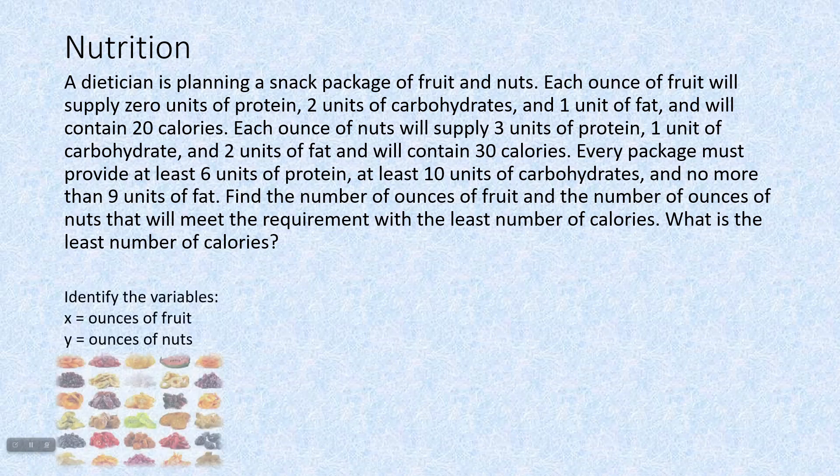Usually the question is how we identify our variables, but the question is what is the least number of calories? So we have to go back to our action sentence. Find the number of ounces of fruit and the number of ounces of nuts. So we identify our variables. X is the number of ounces of fruit and Y is the number of ounces of nuts.